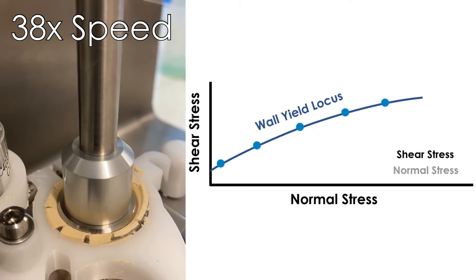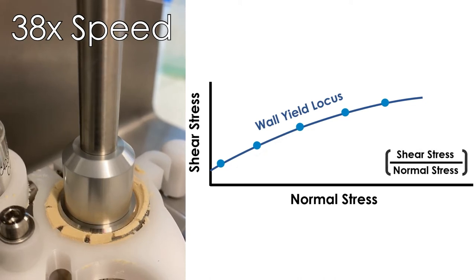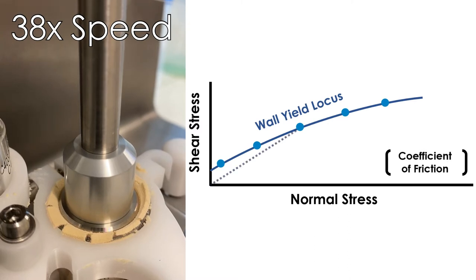The coefficient of friction is calculated from the ratio of shear stress to load stress, and the more commonly used metric of wall friction angle is simply the inverse tangent of this.